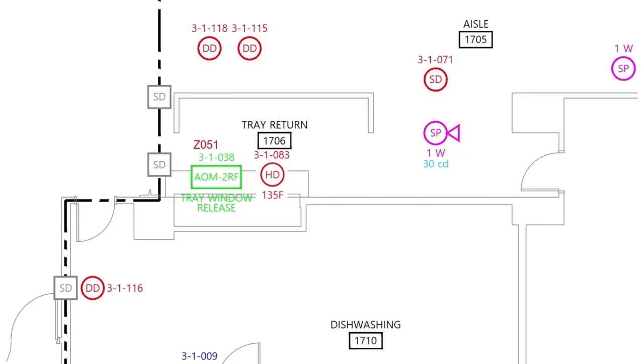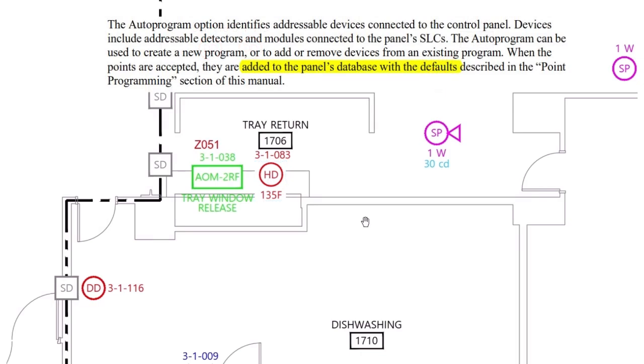So I do get asked, since a lot of the panels have auto-configuration as part of their setup procedures, can't you just take this smoke detector here, remove it, put a heat detector in, and then just auto-config the system? The answer is yes and no. You couldn't do that. However...